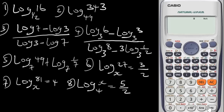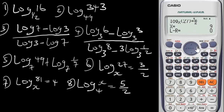On some calculators, if you assign x to be 0 it may display an error — no need to panic, just go back and assign x to be 1 and it will solve it. Let's go back, press Shift Calc, and assign x to be 1. You'll still get the same result: 9. So the answer is 9.